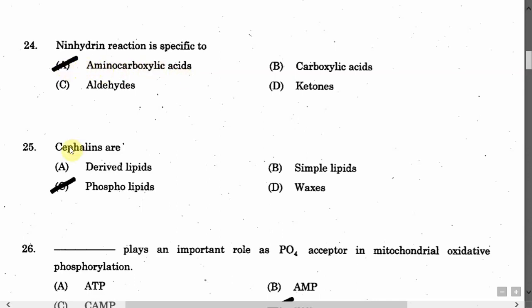The next question is: Cephalins are — Option A: Derived lipids. Option B: Simple lipids. Option C: Phospholipids. Option D: Waxes. The correct answer is Option C, that is phospholipids.